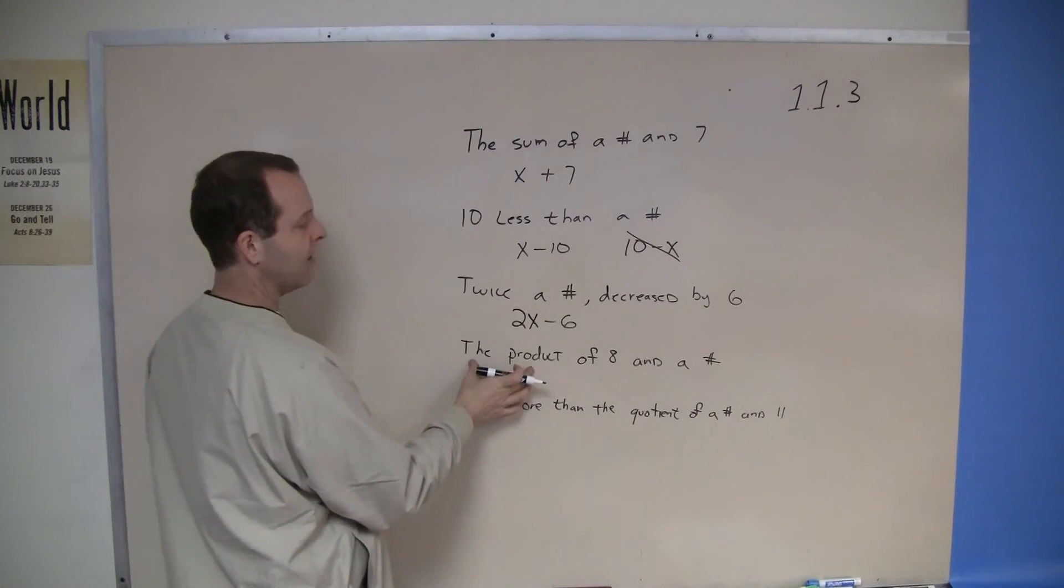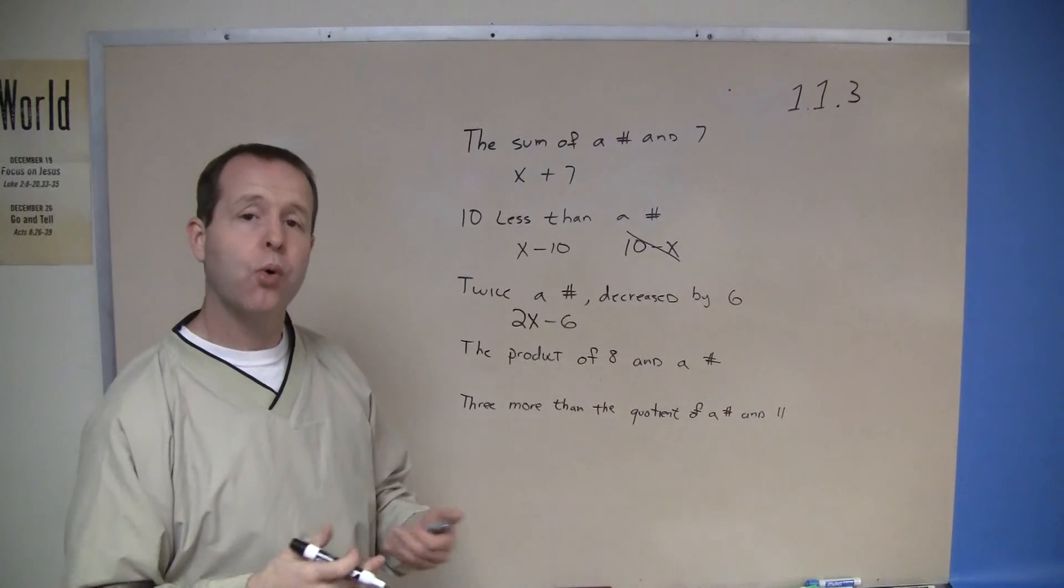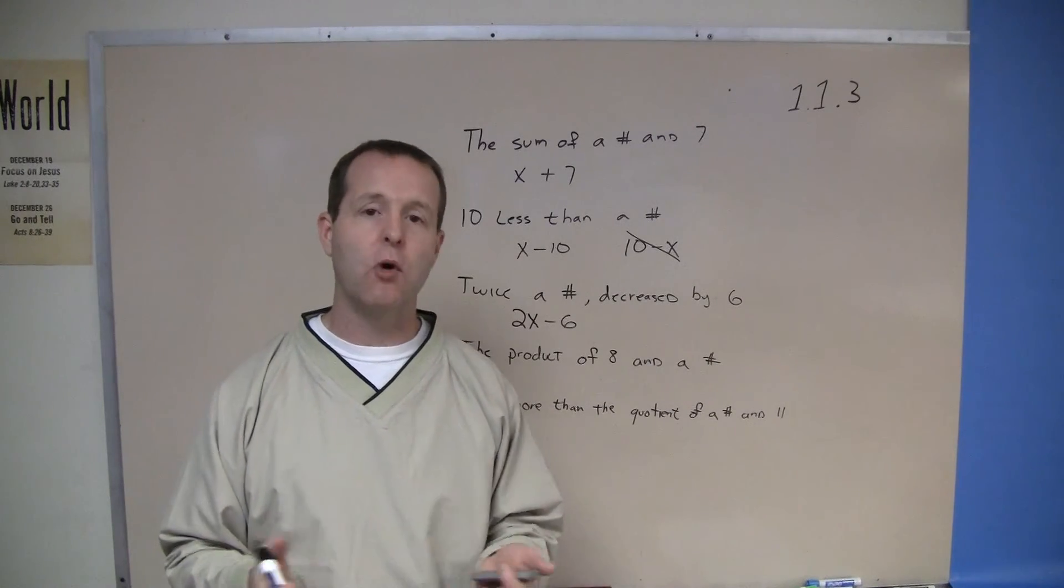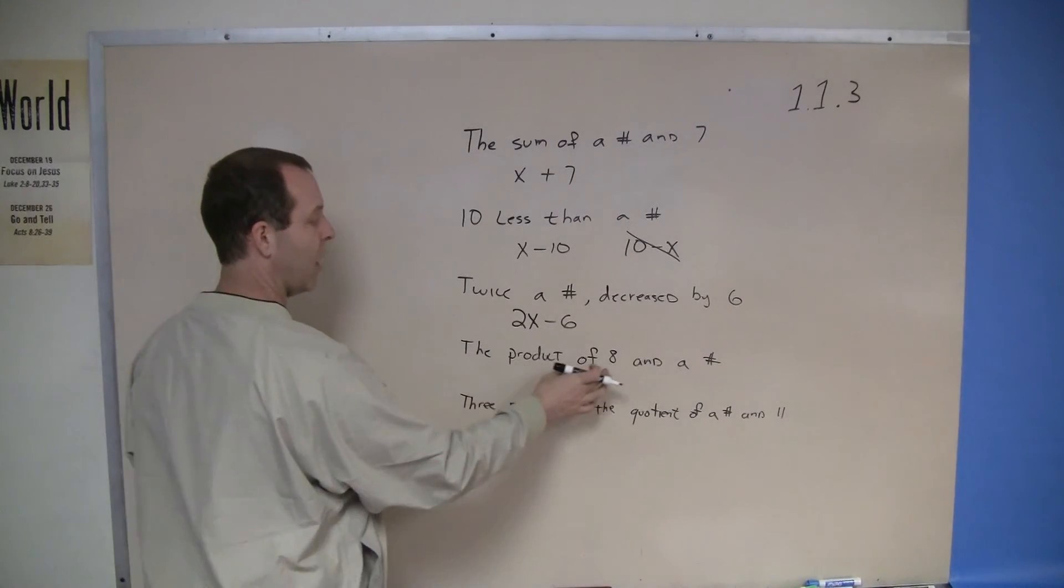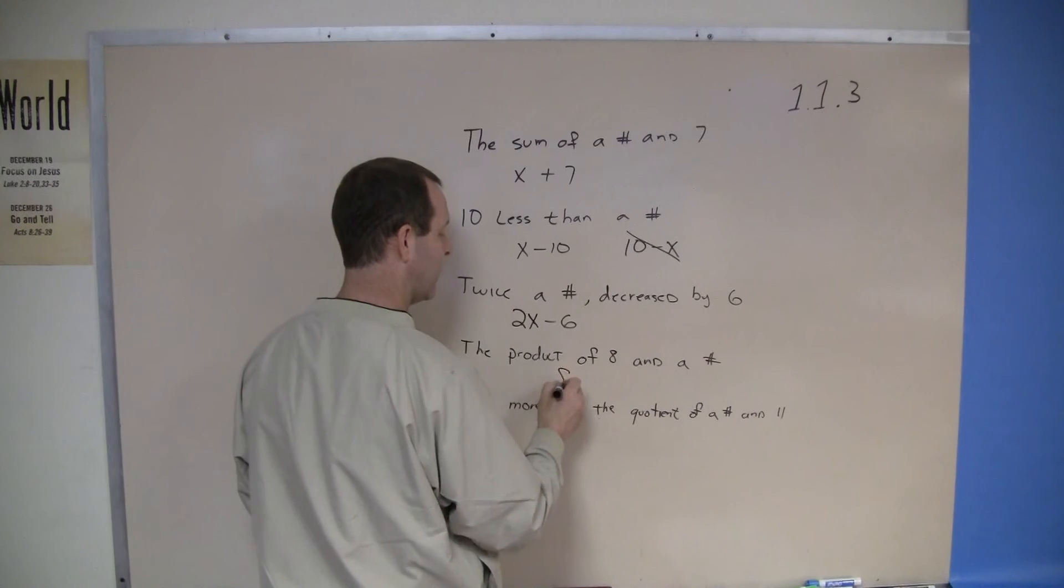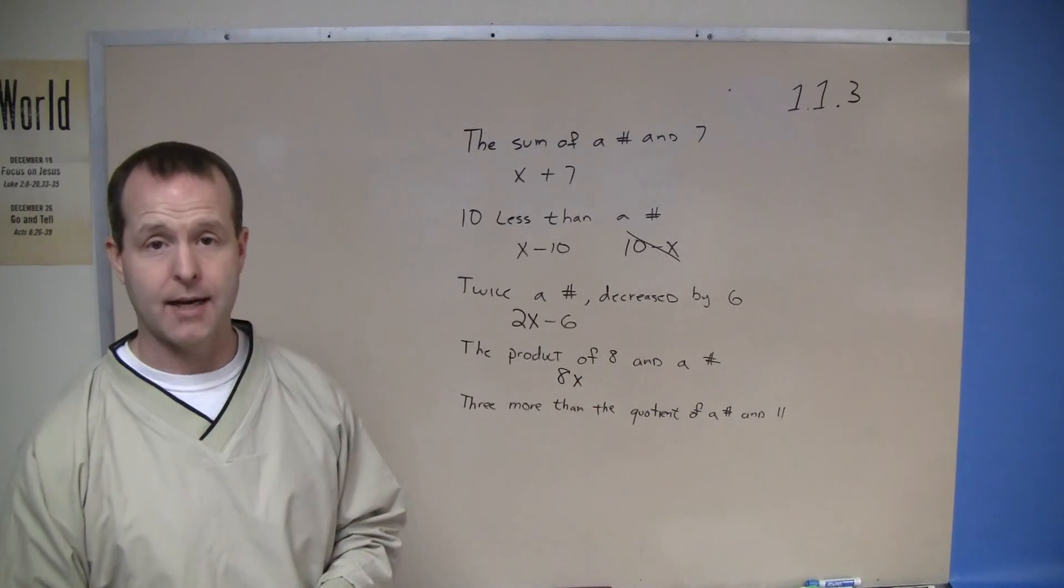The fourth statement - the product of eight and a number. Product is an English term for multiplication. So I've got the product of eight and some number, and I can just rewrite that as eight times x.